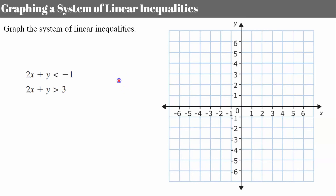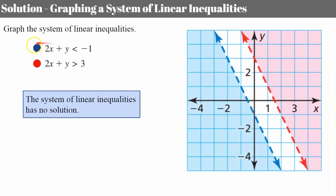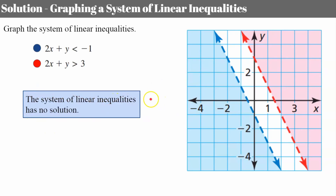Welcome back. Again, I've graphed this inequality in blue — a dashed line because it's less than, shaded to the left. The other is shaded in red, also with a dashed line because it's greater than, shaded to the right. You'll notice there's no overlap, which means this system has no solution because there is no ordered pair on the coordinate plane that is true for both inequalities.